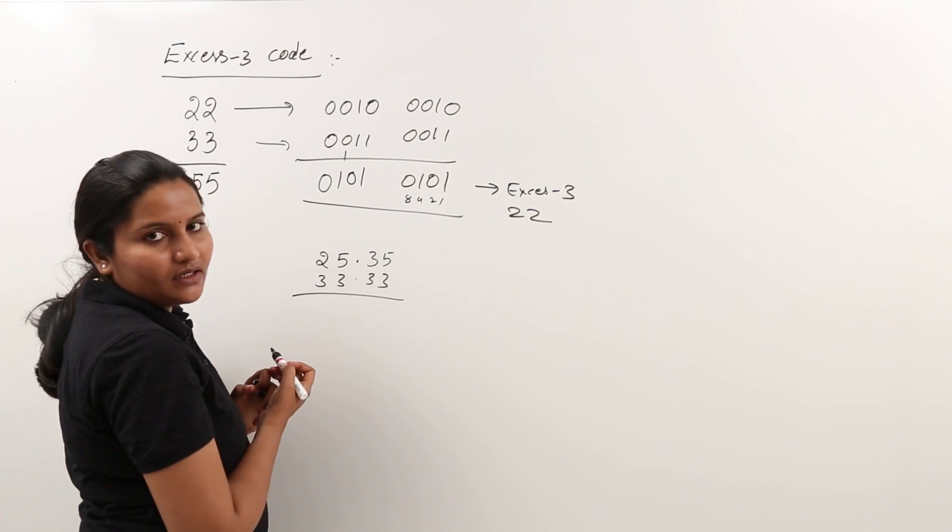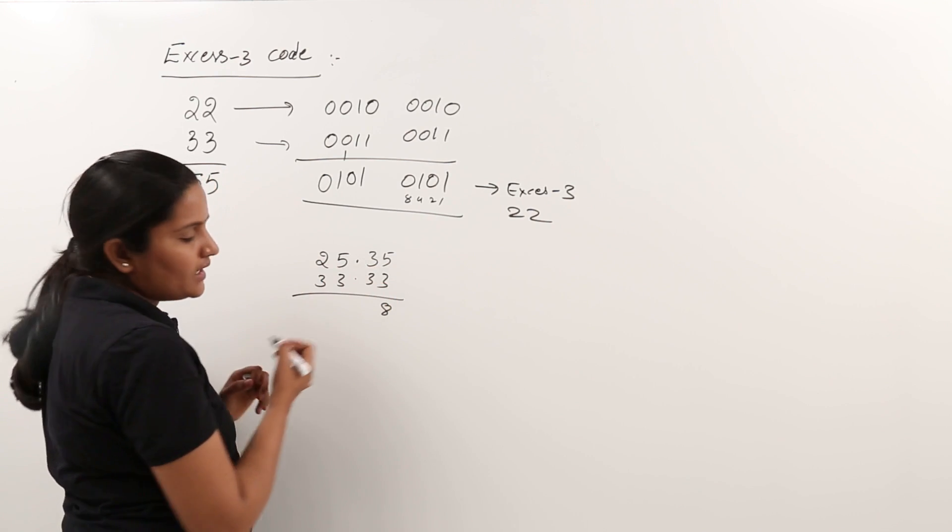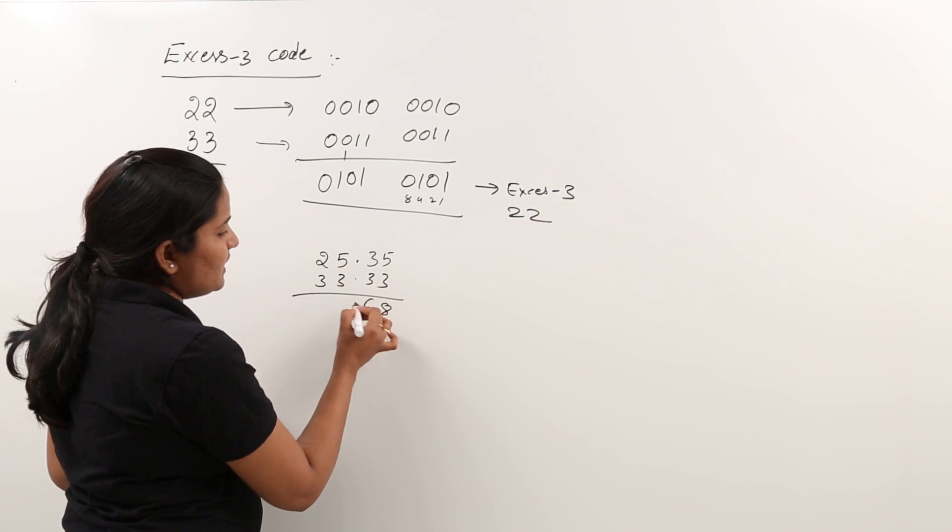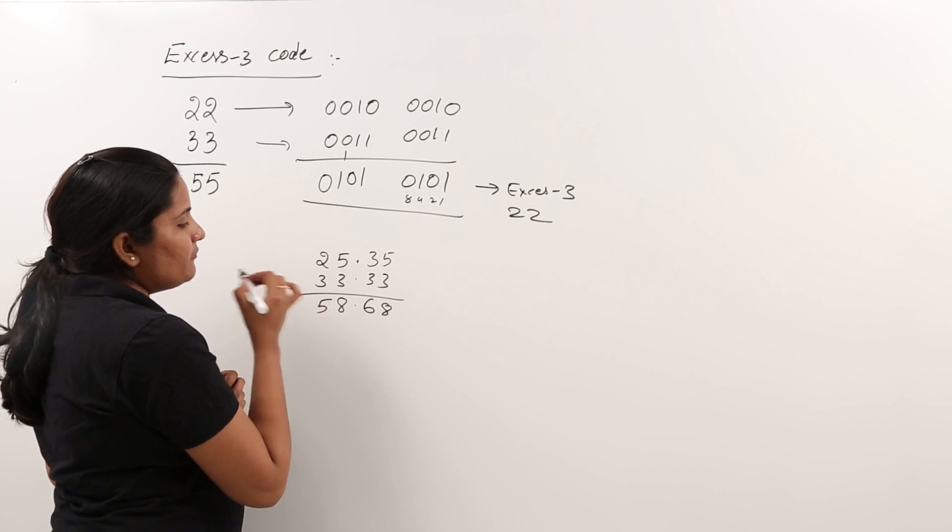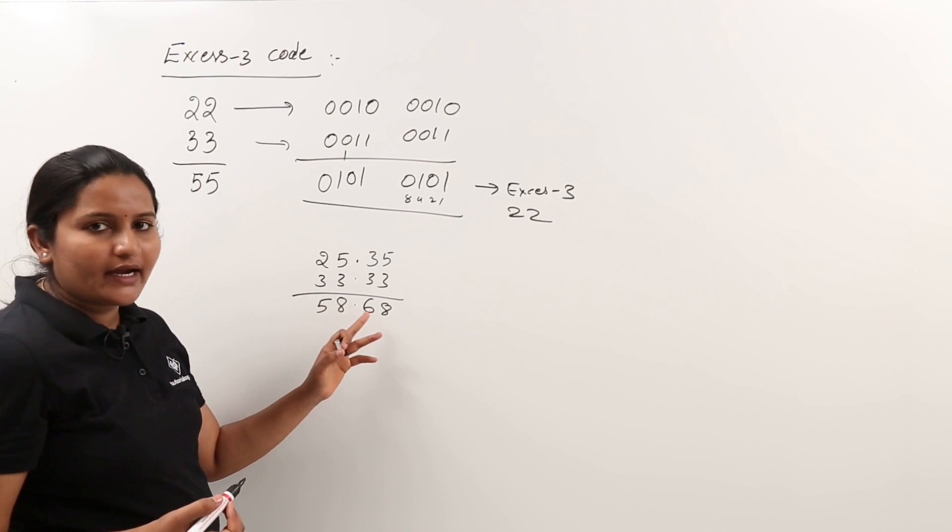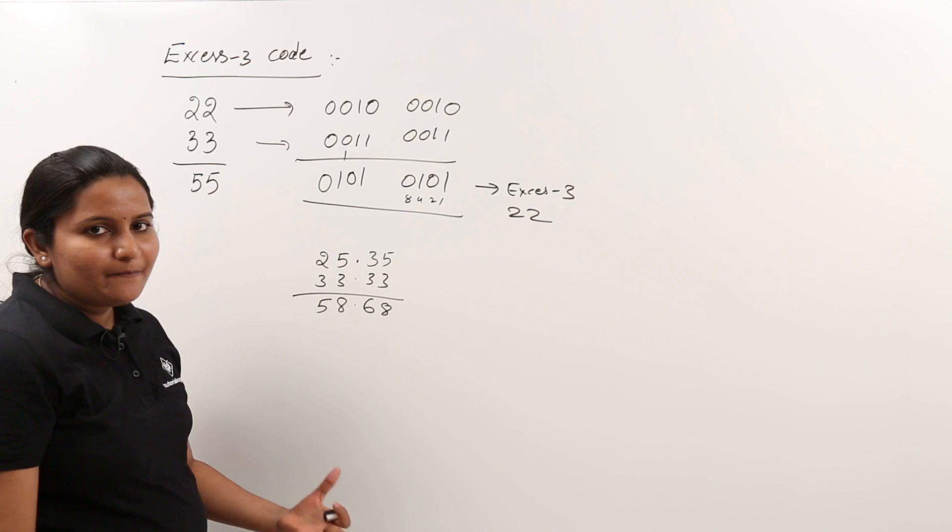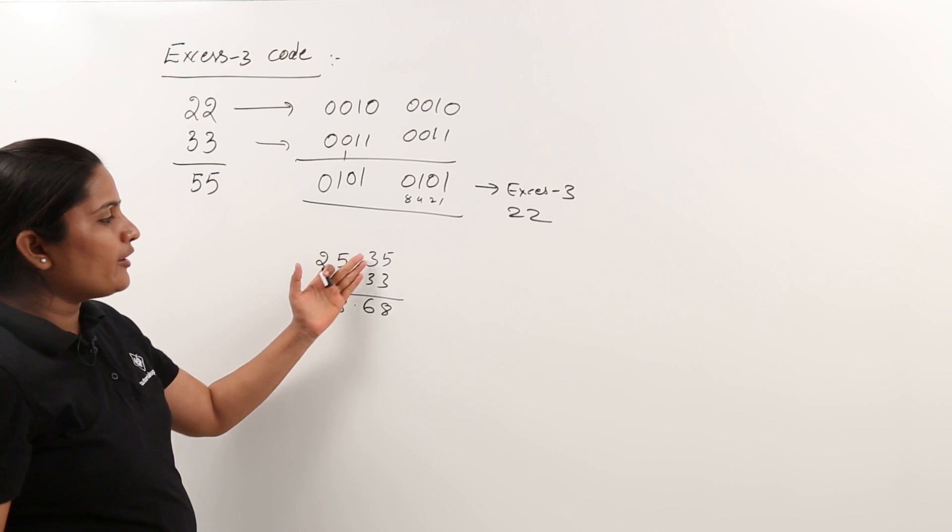So 5 plus 3 you are getting 8, 3 plus 3 you are getting 6, here 5 plus 3 you are getting 8, here 2 plus 3, 5 you are having.